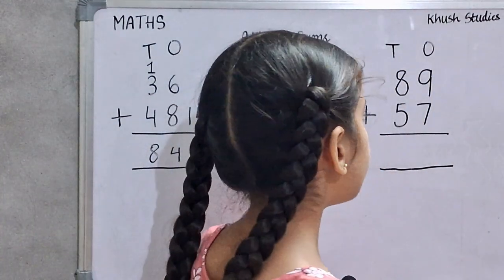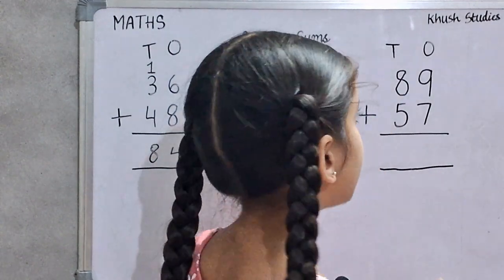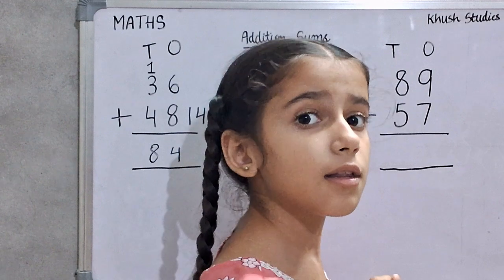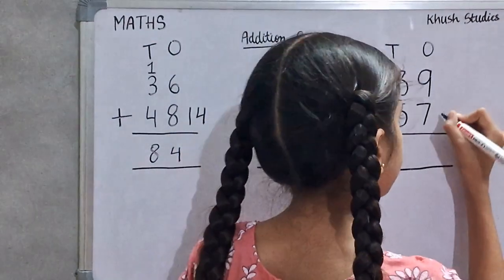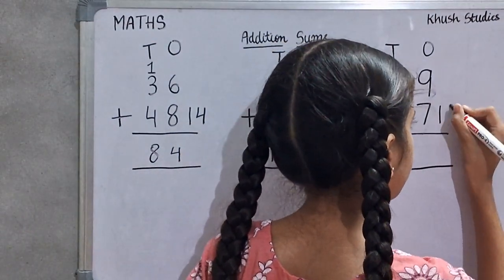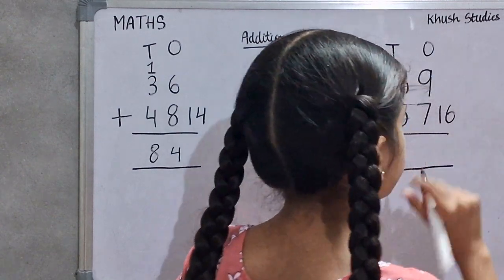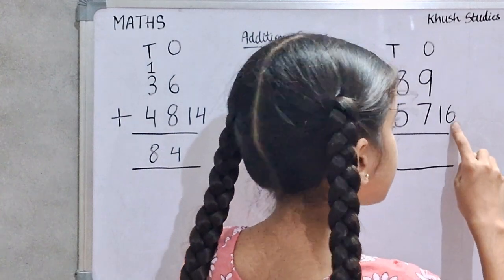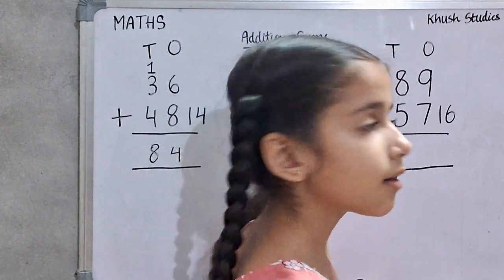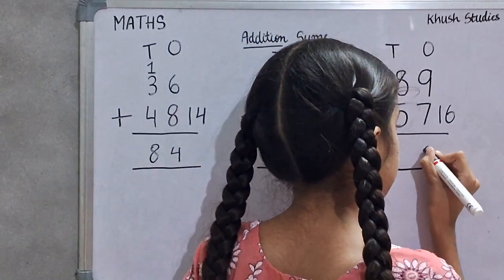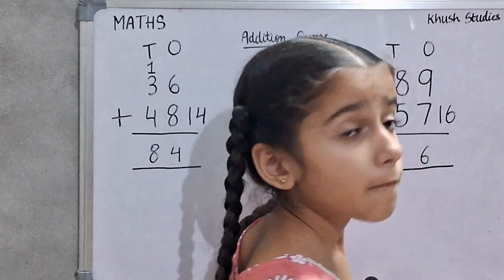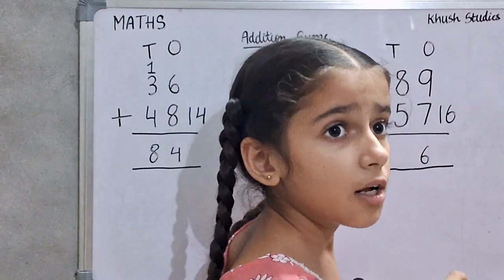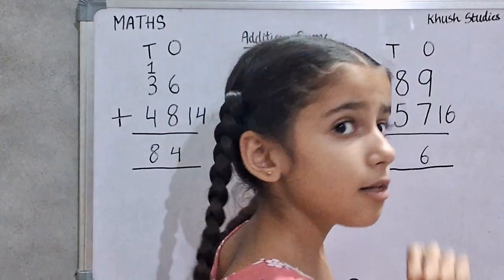We will add ones digit. 9 plus 7 is 16. We will write ones digit 6 in ones place. We will write tens digit 1 in tens place.